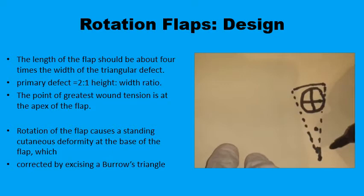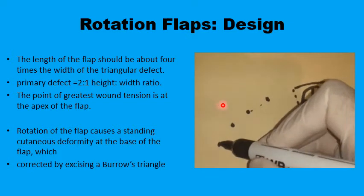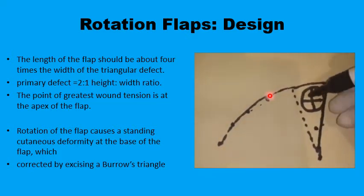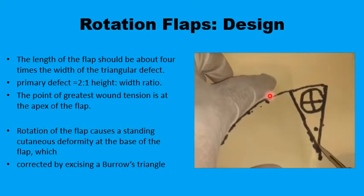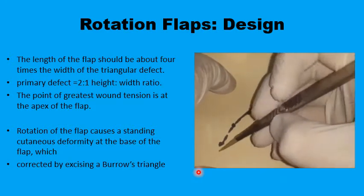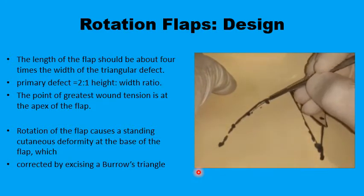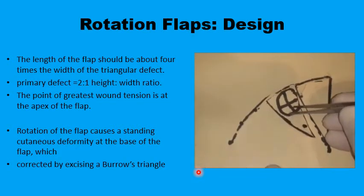From the apex, you extend a curvilinear line that should measure about 6 times x — up to 8, or down to 5 if necessary. Once you remove the lesion and incise the curvilinear line, the flap can be mobilized into the defect.